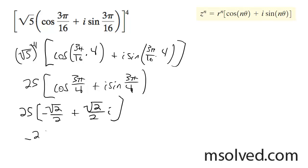We end up with negative 25 root 2 over 2 plus 25 root 2 over 2i. That's the solution.